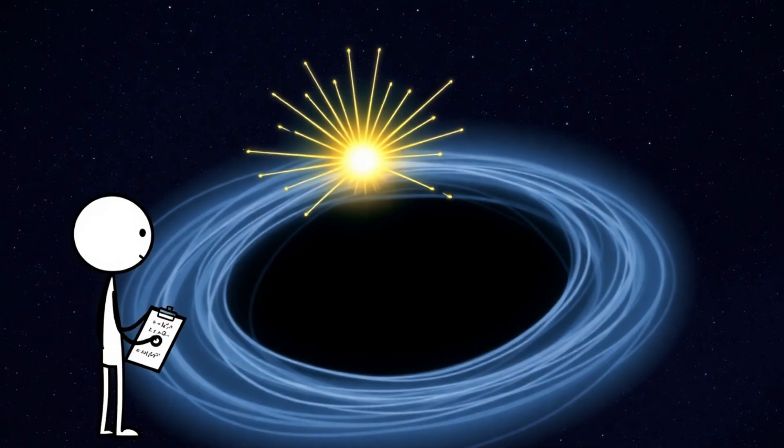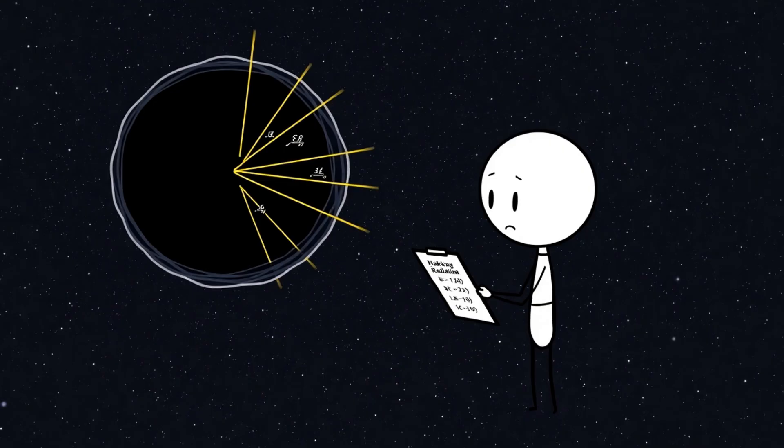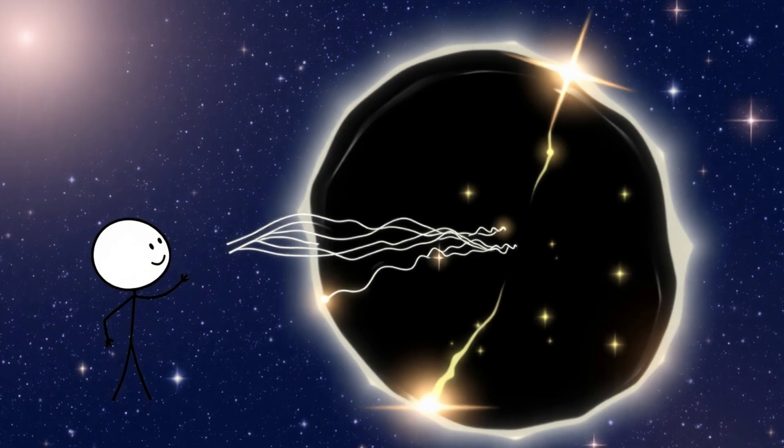The other camp argues it survives, encrypted on the black hole's event horizon like some kind of cosmic blockchain. To this day, there's no final verdict. But the paradox sparked wild theories like the holographic universe, the idea that reality itself might be a giant 3D projection, storing all data on a vast cosmic screen.